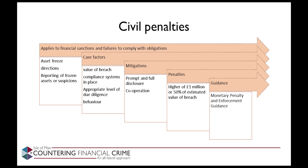Once the severity of the case has been determined, consideration will be given to any mitigating factors, which may include whether a person has made a voluntary disclosure and how promptly this was made, and the level of cooperation with the Treasury during the investigation. Once the case factors and any mitigations have been determined, a penalty may be issued. The maximum penalty that may be imposed is the higher of £1 million or 50% of the estimated value of the breach. As an example, if the value of the breach was estimated to be £5 million, the maximum penalty that could be applied is £2.5 million. Further guidance on monetary penalties and how the Treasury enforces sanctions will be published later this week on the sanctions website.